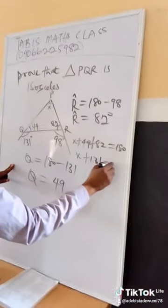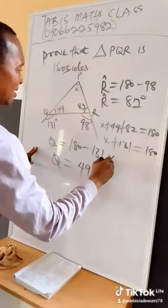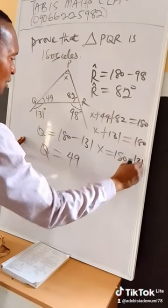So X now plus 131 equals 180. So X equals 180 minus 131.